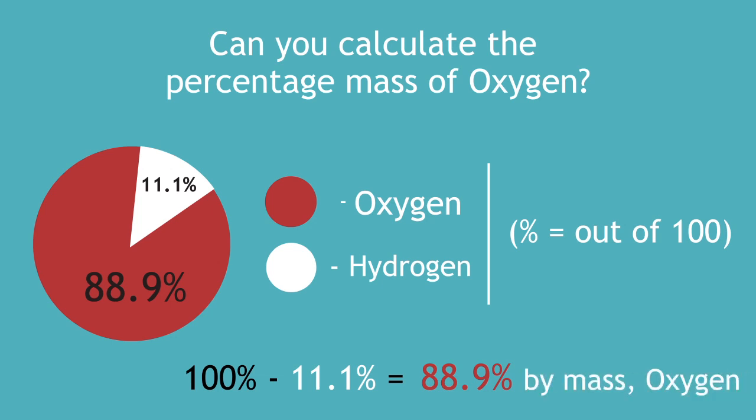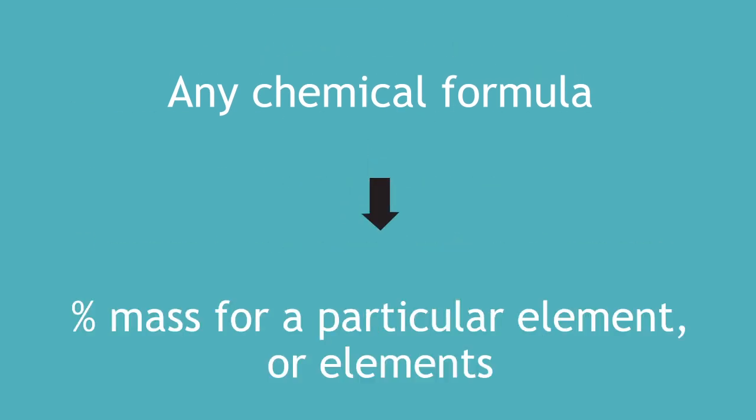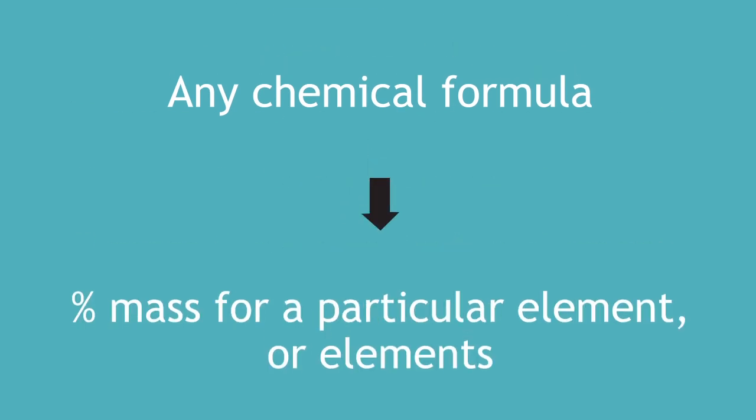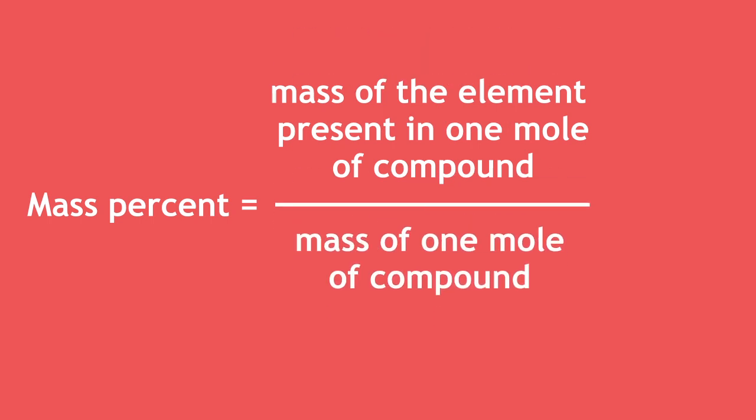The same method can be applied to any chemical formula to work out the percent mass for a particular element or elements. In summary, the percent mass is the mass of an element present in one mole of a compound divided by the molar mass of one mole of that compound. To turn this into a percentage, you multiply it by 100.